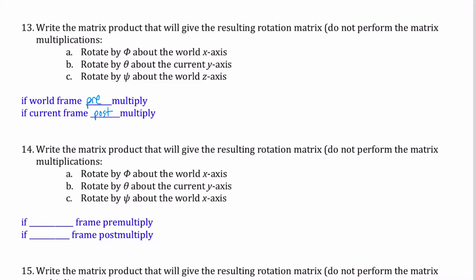And so here, the first rotation we're going to do is around the world x-axis. And we're going to rotate by phi. And then you want to rotate by theta about the current. So it's a current we're going to post-multiply, R_y of theta. And then finally, we're going to rotate by psi about the world z-axis. Rotate z-axis by psi.